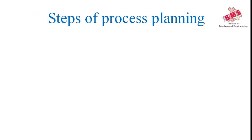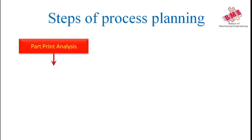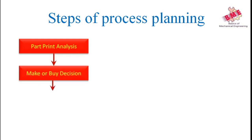Next we will see the steps of process planning. There are nine steps. The first is part print analysis — as discussed earlier, the part print is provided by the design engineer to the process engineer to decide the sequence of operations with the manufacturing specifications.